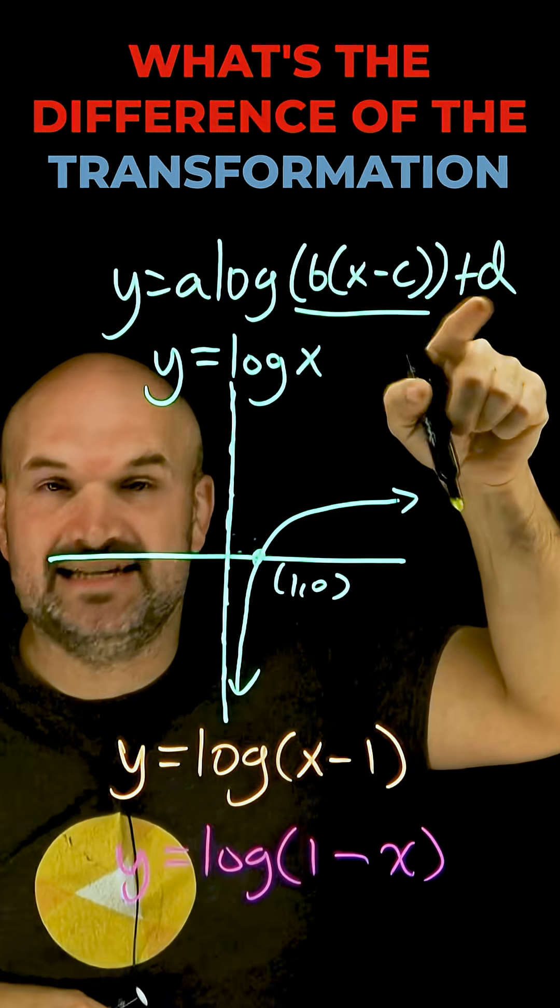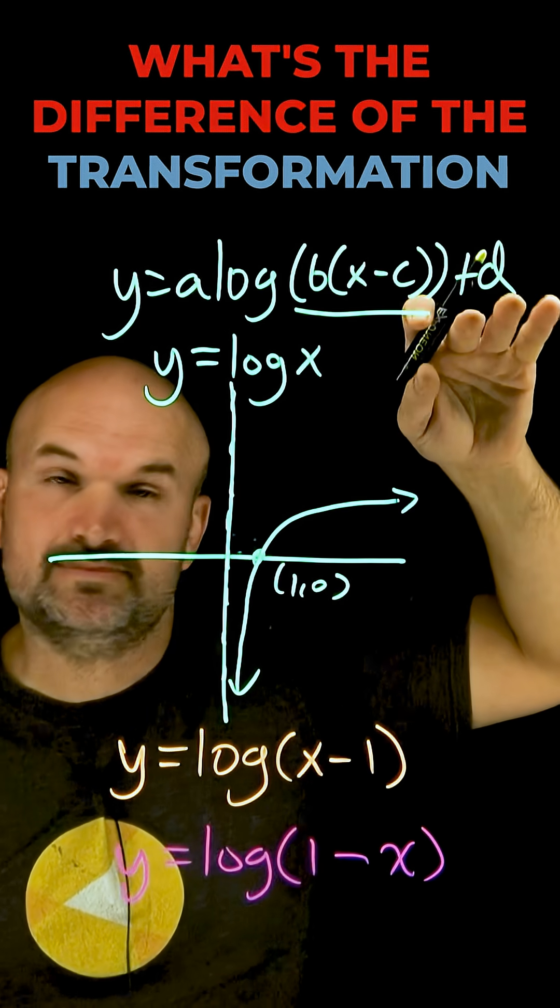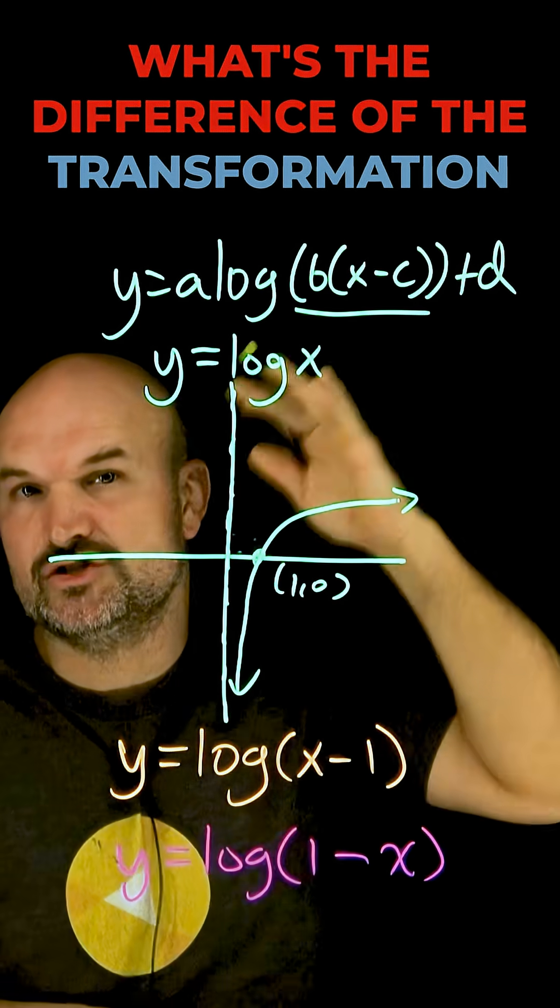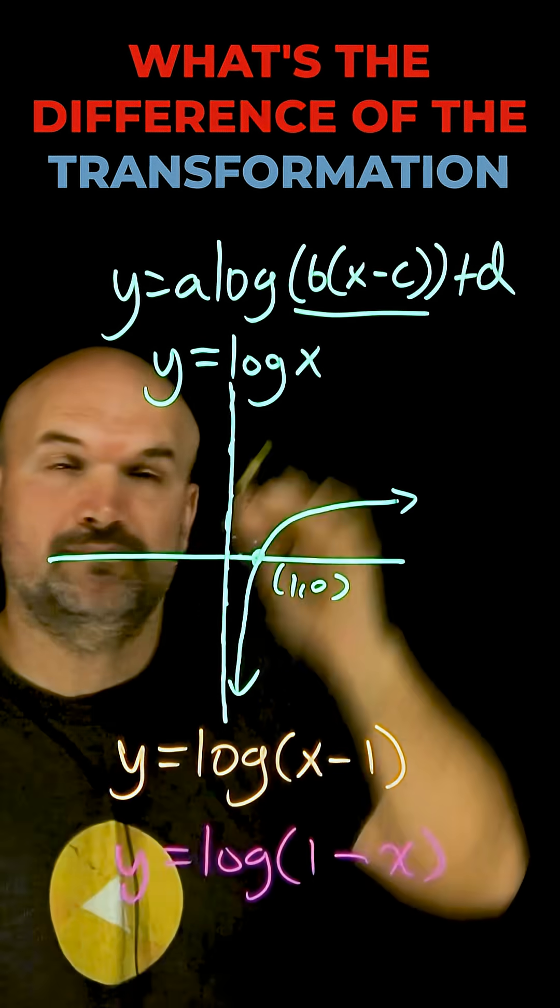The same thing works on the outside. D is going to be our shift up or down if it's positive or negative, and A is going to be our stretch compress or our reflection but that's going to be vertical.